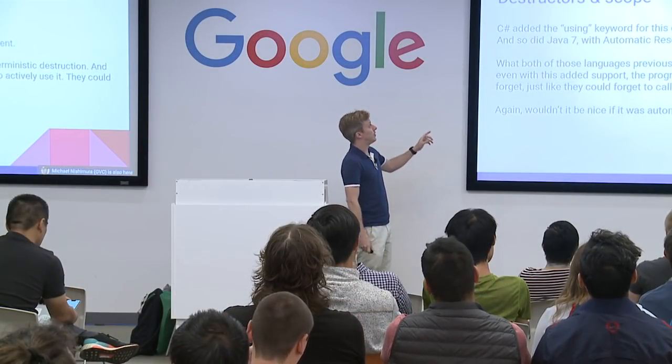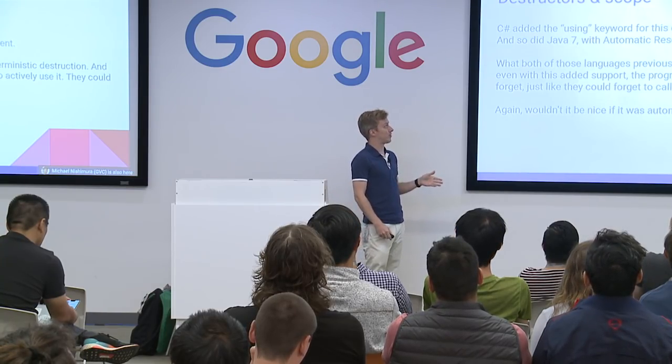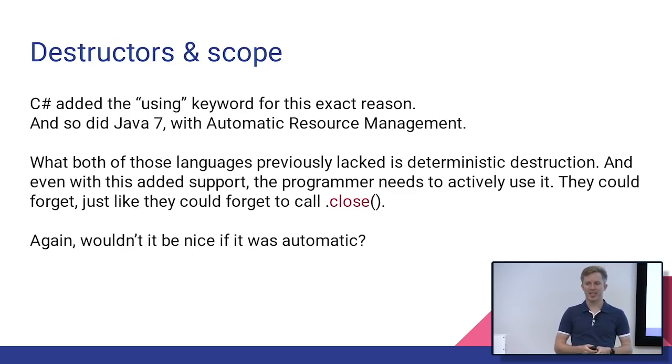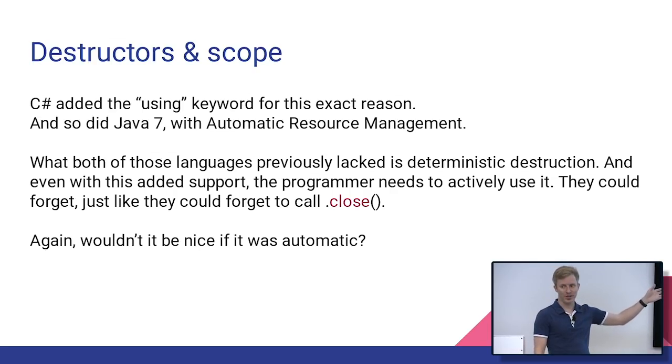C Sharp added the using keyword, and then Java 7 added automatic resource management. And that gives you a way to say, within this range of code, I'm going to use this resource. And when I'm done, I want you to garbage collect just that resource. So it kind of solves this problem, kind of. But now we have a separate problem, and it's actually kind of similar. The responsibility is on me to use this using keyword. And if I forget, I've fallen back into the same issue. It's the exact same as if I had forgotten to call dot close. So we didn't really solve the problem here.